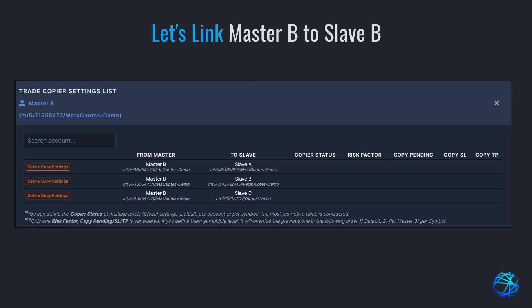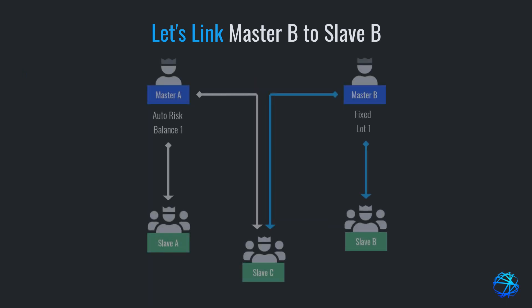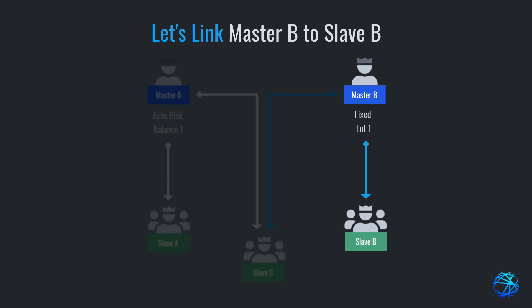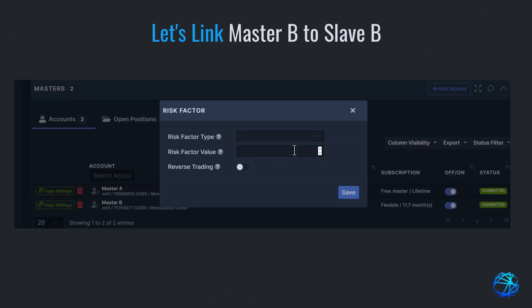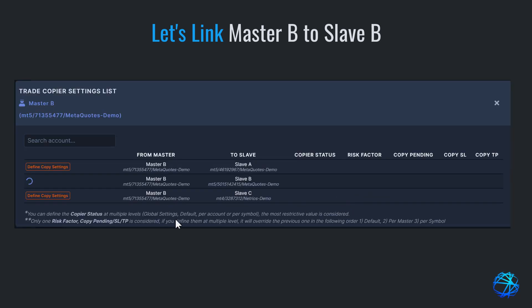The page is almost the same as in slave view, but you won't see a default option here. We want master B to be copied to slave B using the risk factor fixed lot with a value of 1. We'll define the risk factor in slave B, leaving slaves A and C blank. Let's hit save, and we're done.